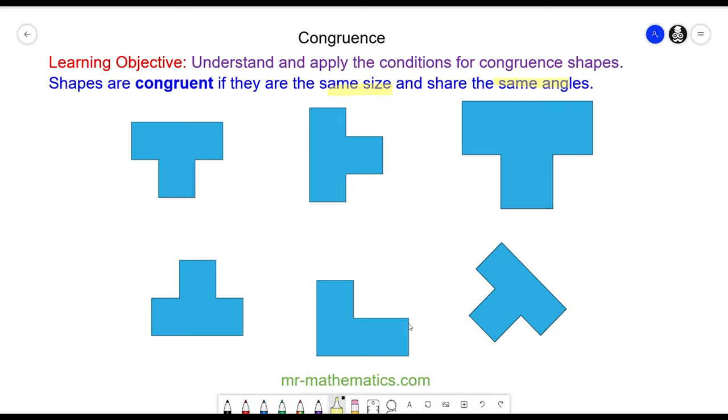Okay, so these four shapes are congruent because even though they are different rotations or reflections of each other, they are the same size and they all have the same angles.